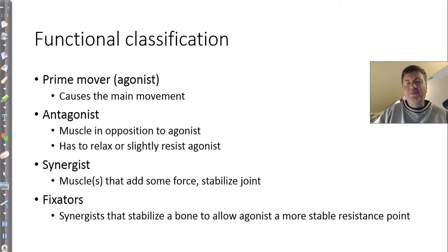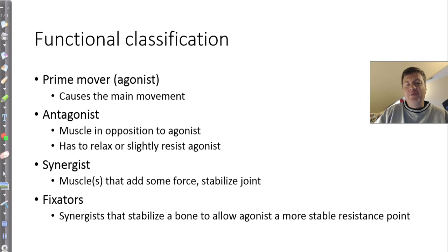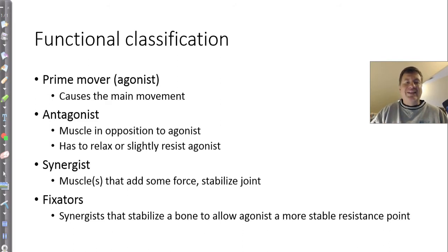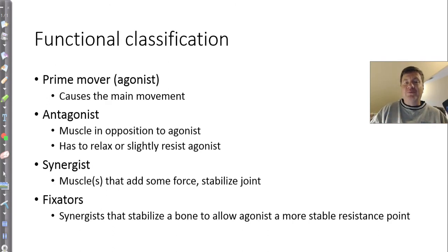I want to talk about some ways we classify muscles. I'm not going to name individual muscles so much as I want you to be aware of how we classify them. The four ways we can classify muscles depending upon the movement are prime movers, agonists, antagonists, synergists, and fixators. A prime mover is the muscle that's mainly responsible for that particular movement — the most important muscle for moving a particular bone and joint. Agonist means the main muscle moving that particular bone for that particular movement.